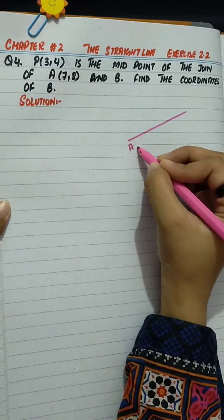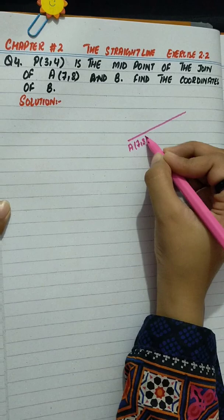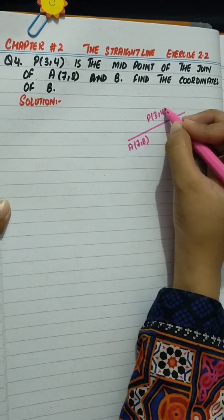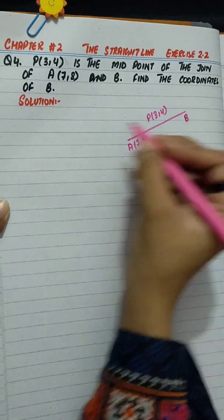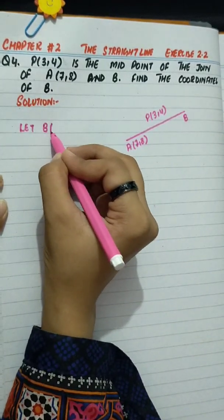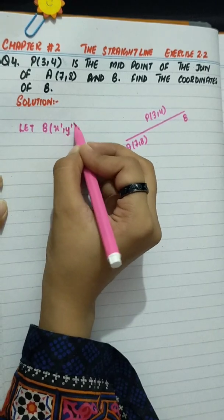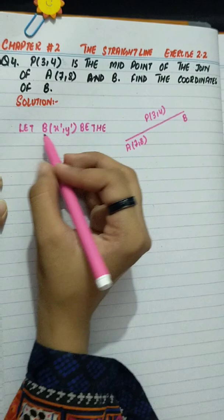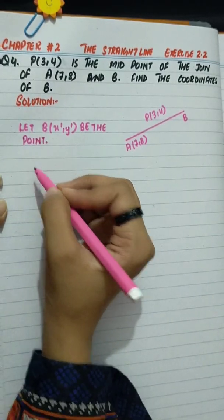A point is 7,8. Midpoint given is 3,4 and point B we have to find out. Let B(x',y') be the point.